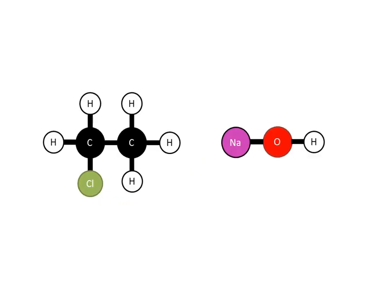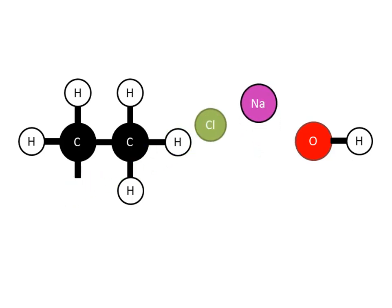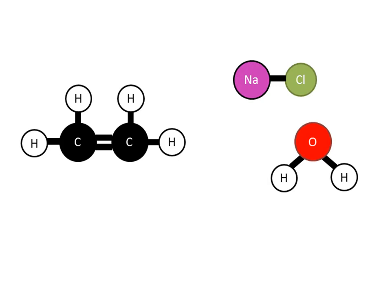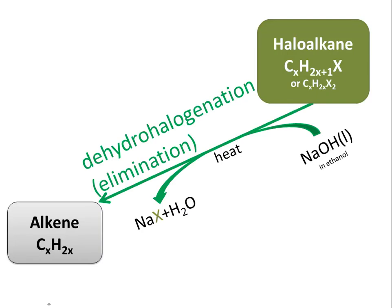What kind of reaction is this? The chlorine is extracted and reacts with sodium; the hydrogen is extracted and reacts with the hydroxyl to form water; and the double bond forms. Nothing has been added to the organic compound — only things have been taken out. This is an elimination reaction, specifically dehydrohalogenation: 'dehydro' because a hydrogen is removed, and 'dehalogen' because a halogen is removed.